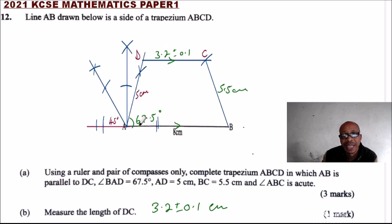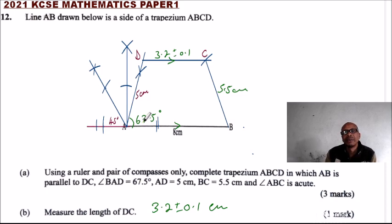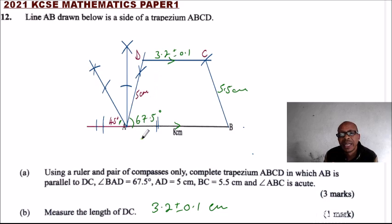Remember: do not use a protractor to measure this angle, because you will not get the marks — you are being tested on whether you know how to construct angles. You have to know how to work it out: multiply 67.5 by 2 to get 135, so you bisect 135 degrees to get 67.5 degrees. By doing that, you will be able to score full marks. I hope you have understood the question — try it on your own using your mathematical set instruments.